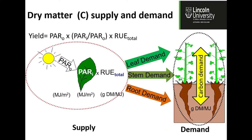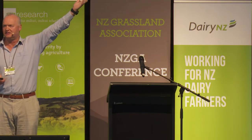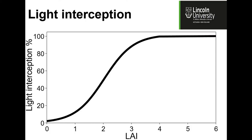How much photosynthetically active radiation do we intercept? The ability of a plant to convert that into dry matter is fairly limited and similar for C3 plants — all our grasses have about the same conversion efficiency. C4s have a different conversion efficiency. It comes back to this: the most important component of growing pasture is how much light did I intercept? Our energy capture device — the green canopy — is only at its most efficient when there are three and a half metres of green leaf area per metre of ground. At that point we intercept all of the available radiation.